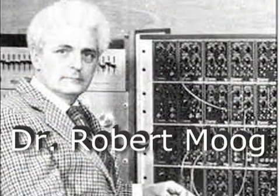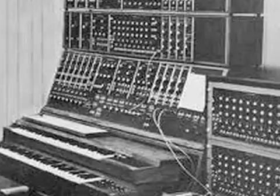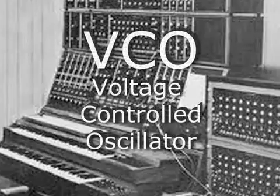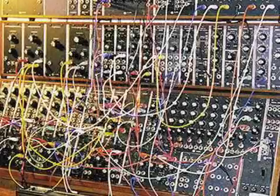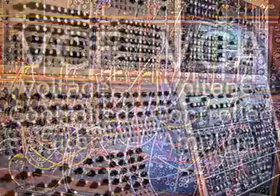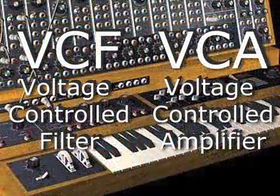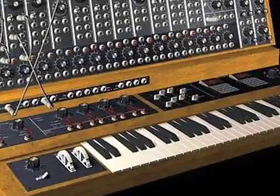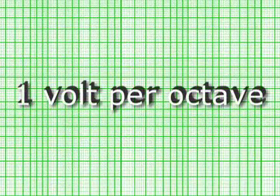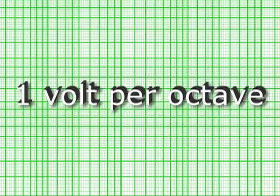In the 1960s, Dr. Robert Moog invented the Moog synthesizer using many of the elements from lab test gear, like voltage-controlled oscillators. He also added voltage-controlled filters and amplifiers, plus a keyboard and a modulation wheel. Moog also decided to use the logarithmic scale of 1 volt per octave for pitch, and a separate voltage to trigger the envelope generators.